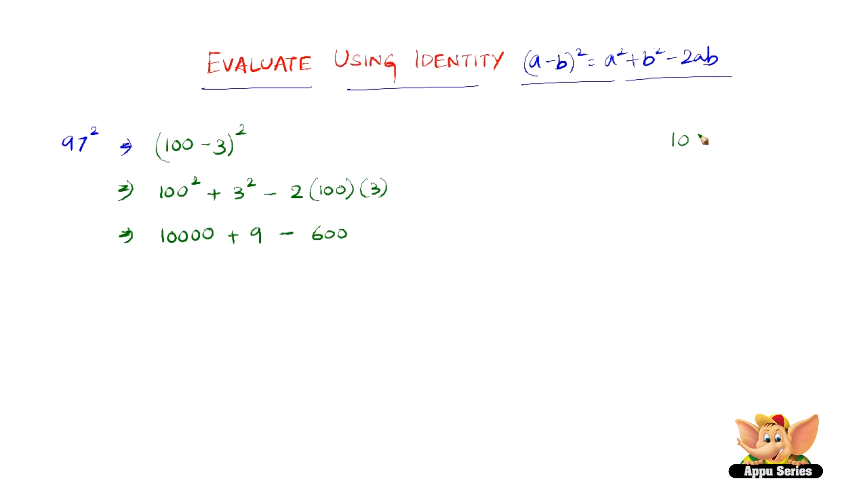So all we need to do now is 10,000 + 9 - 600. First, let us find 10,000 + 9.